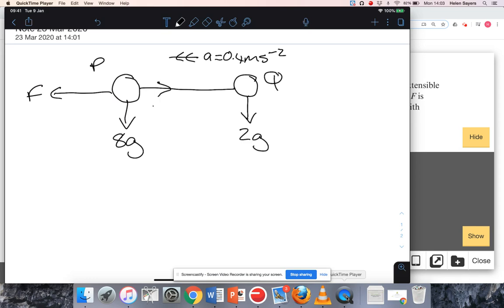Particle P is being slowed down by the tension, and particle Q is being pulled along by the tension. Those tensions will be equal and opposite to each other.